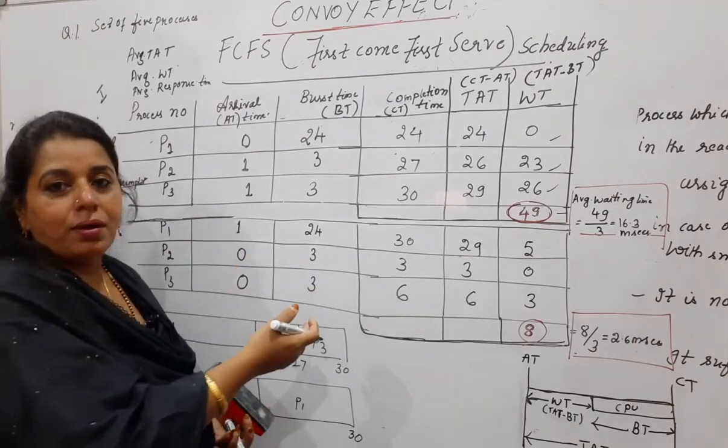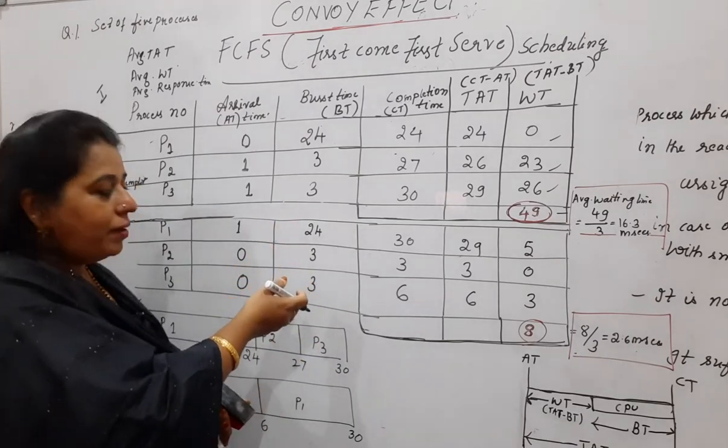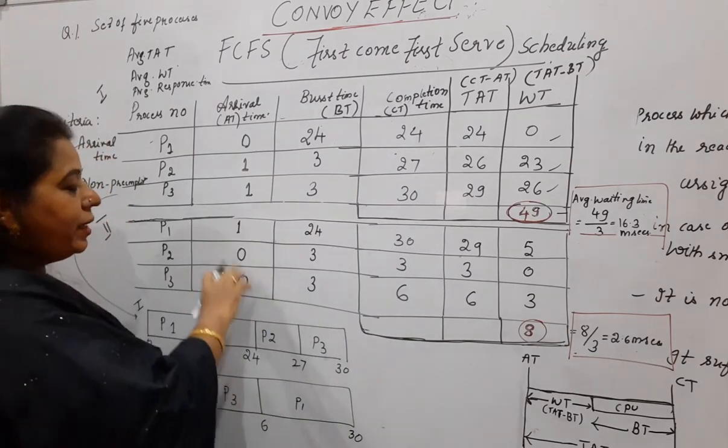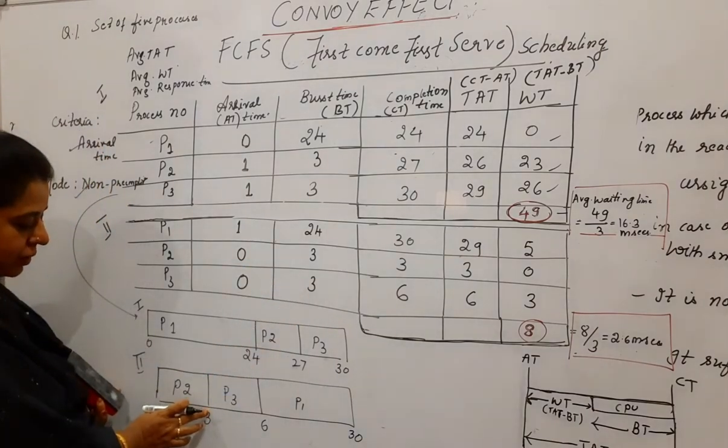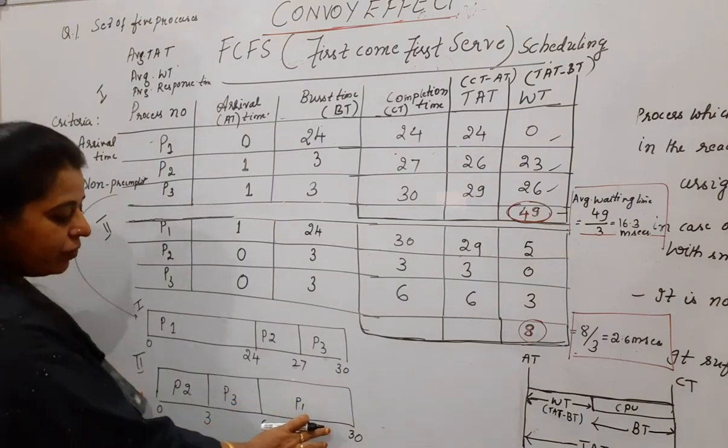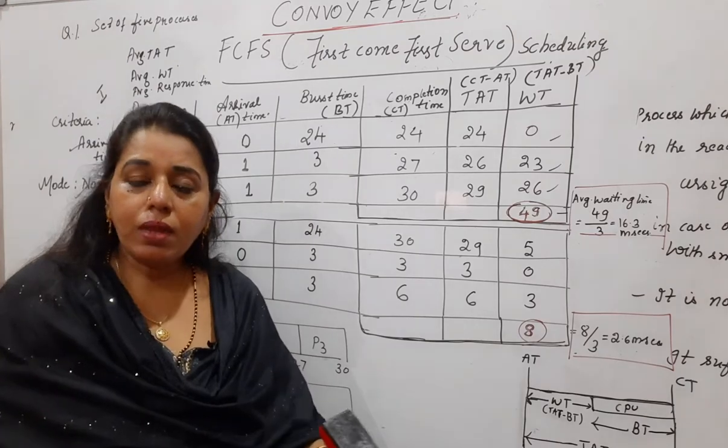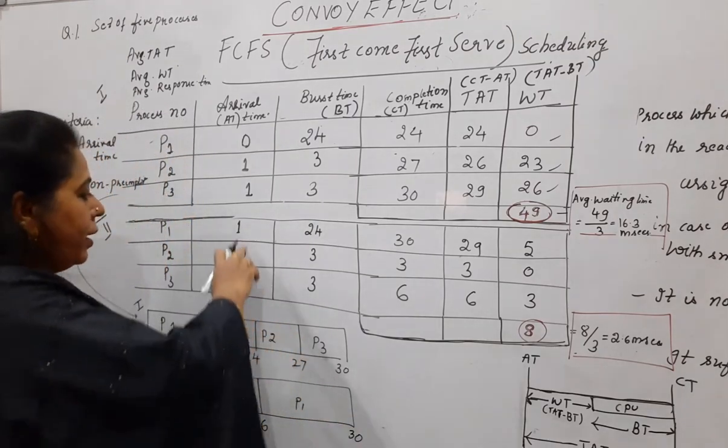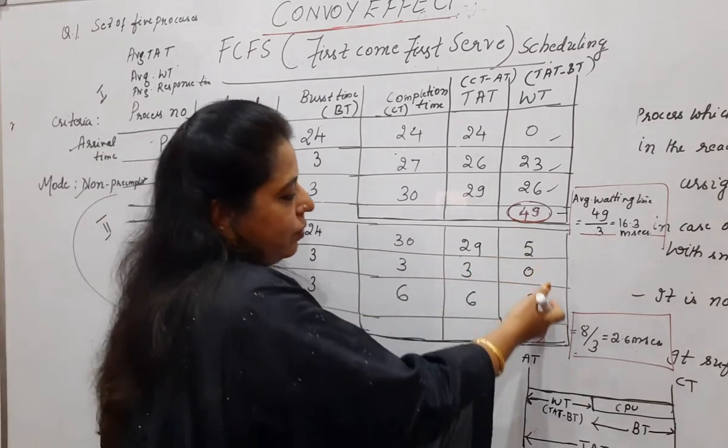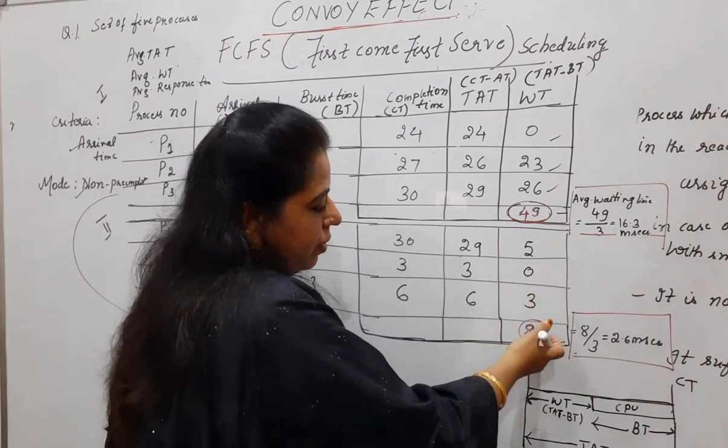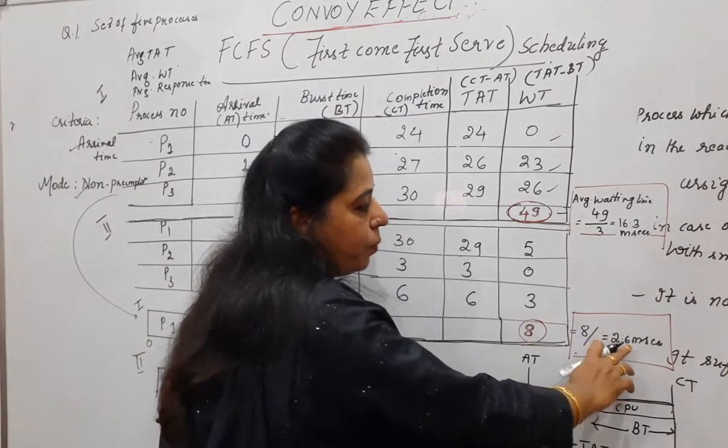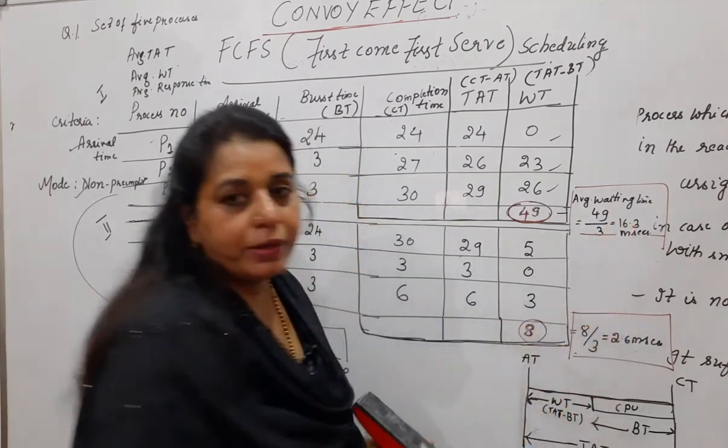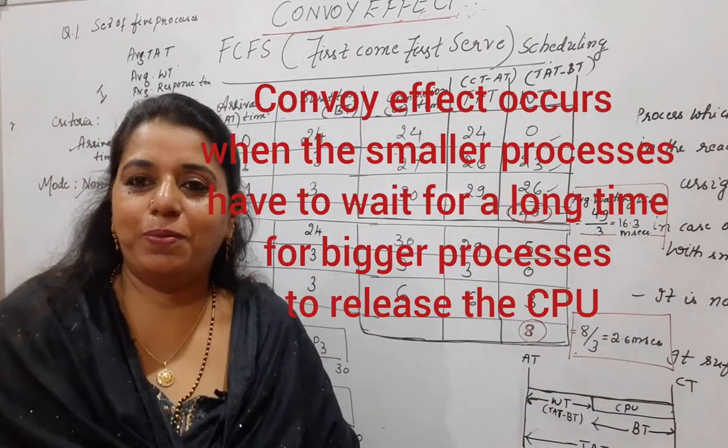Just to show that suppose if we had done in a reverse manner. That's the reason in the second situation, I changed the arrival time. Once I changed the arrival time, P2 got scheduled first, which has only 3 units of burst time. Then P3 got scheduled. Then P1, the process with the larger burst time got scheduled at the end because I changed the arrival times here. You can see the waiting time in each of these processes. Final waiting time is 8 units, whereas the average waiting time is only 2.6. See the difference, 16.3 here and 2.6 here. Hope this session is useful to you all. Thank you. Bye bye. Take care.